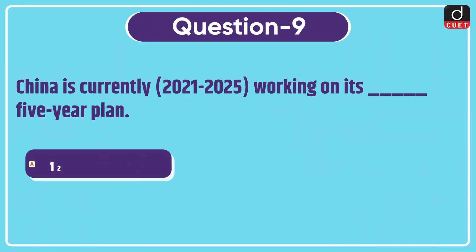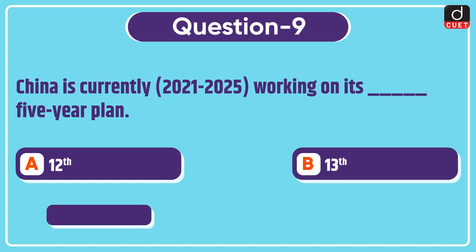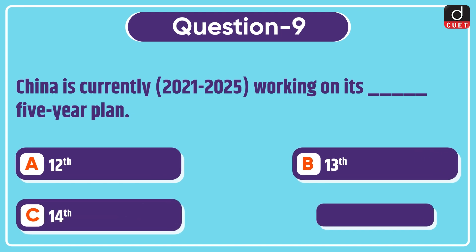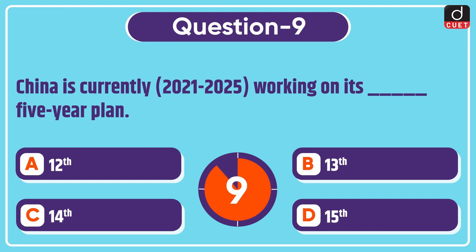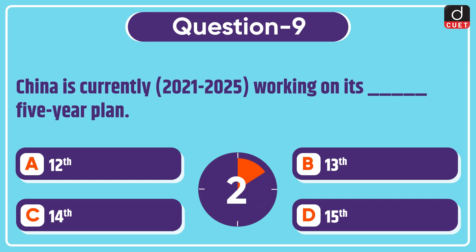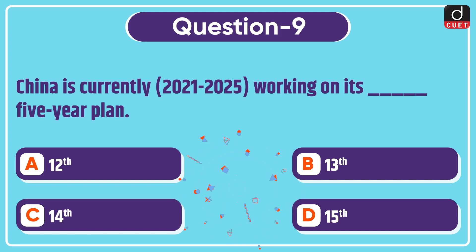Next question: China is currently (2021 to 2025) working on its dash five-year plan. 12th, 13th, 14th, or 15th? The correct answer is option C, 14th.